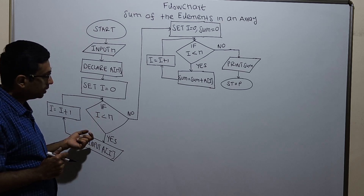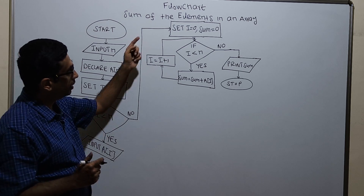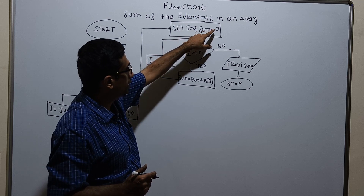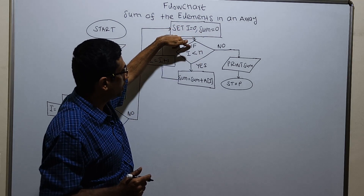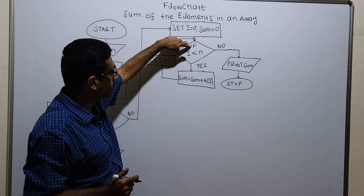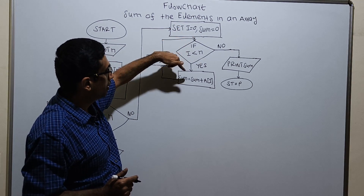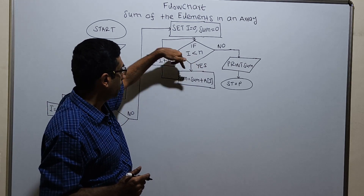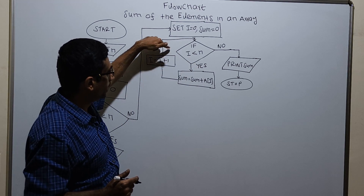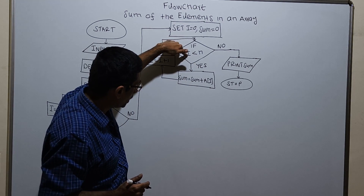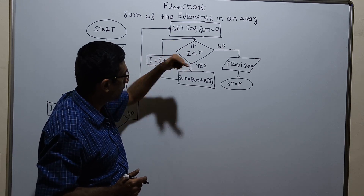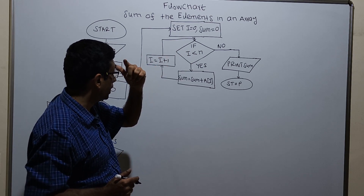If i less than n is false, I am initializing i equal to 0 again and the variable sum. I am checking the condition. If i less than n is true, sum equal to sum plus a of i. i will get incremented by 1. Again i value will be checked. i is less than n. It is true. Sum equal to sum plus a of i.